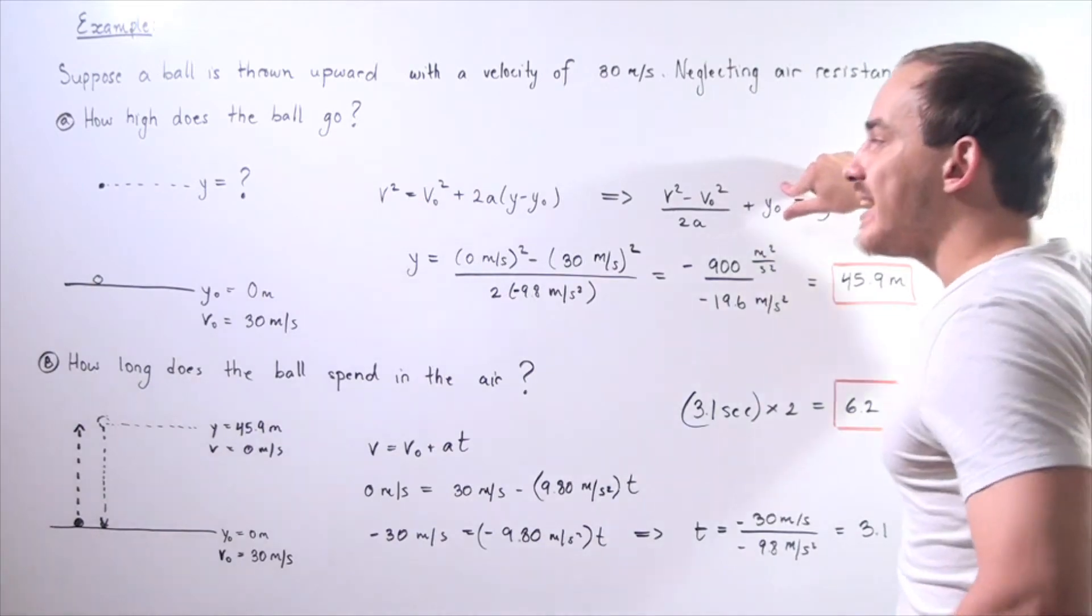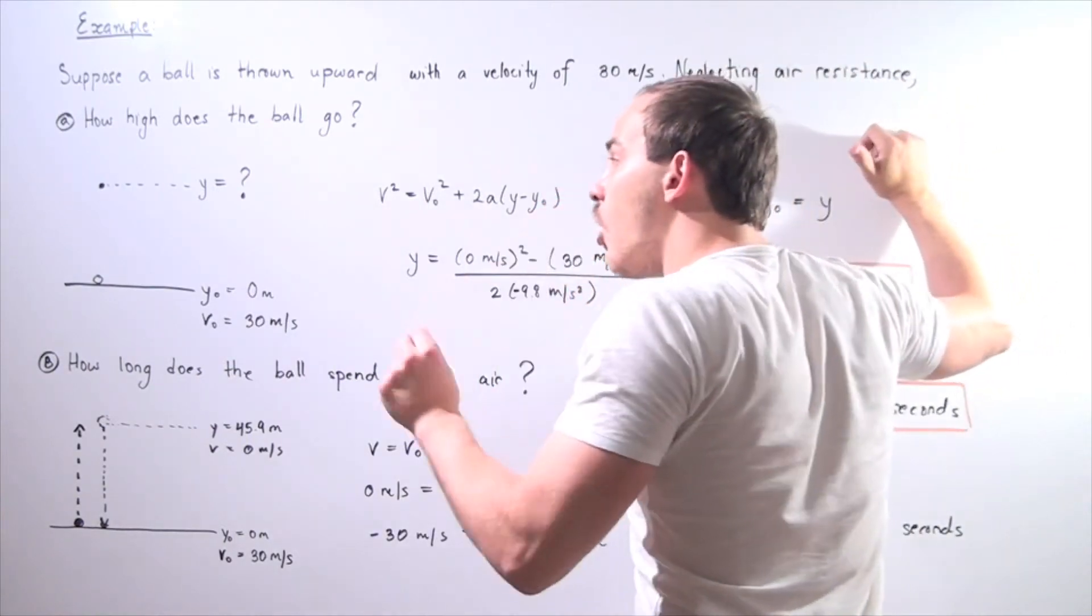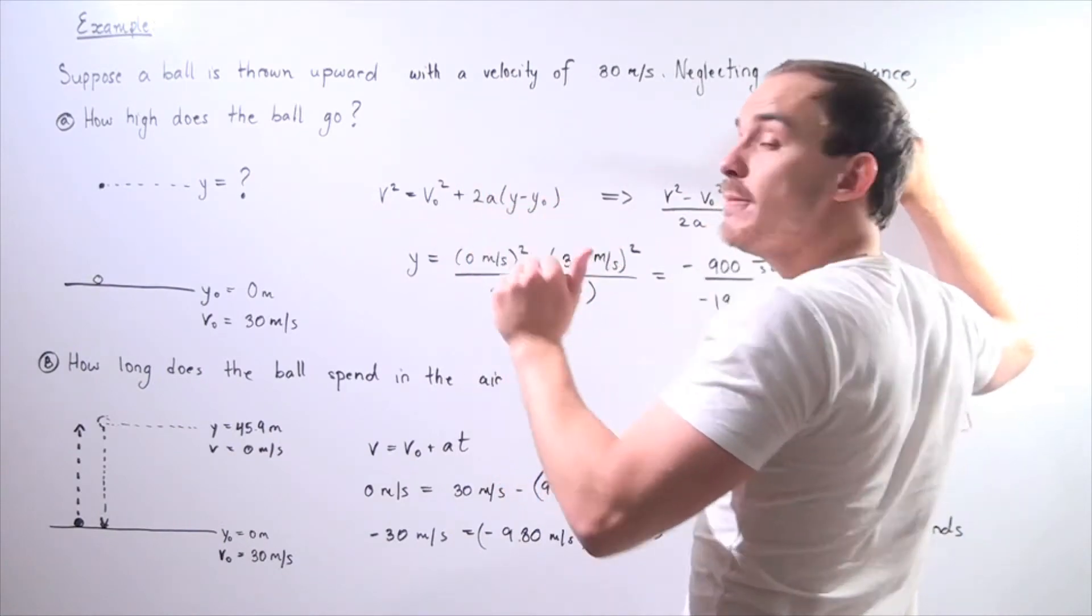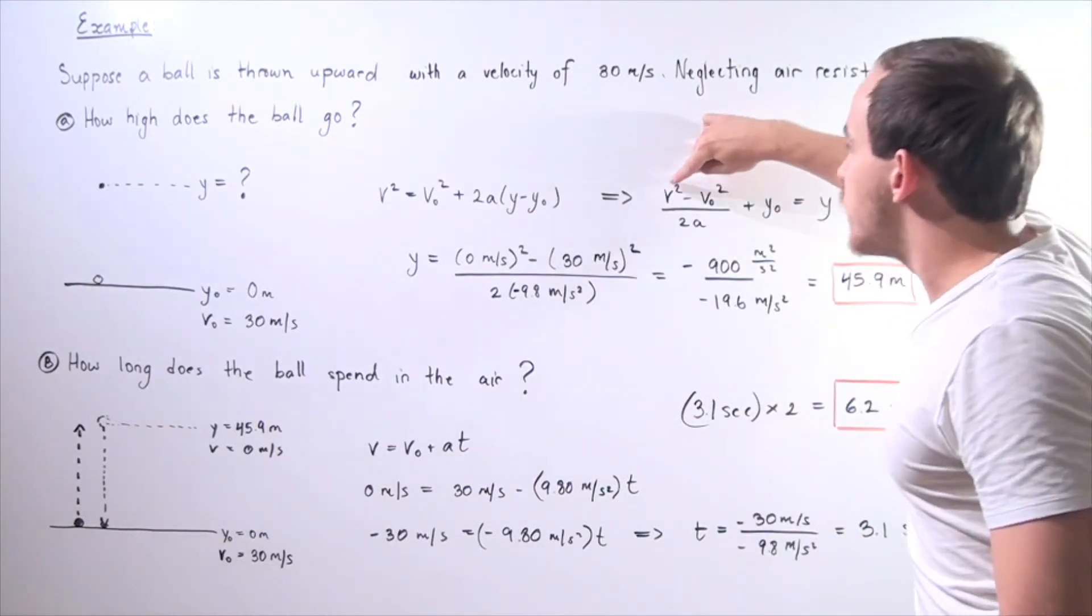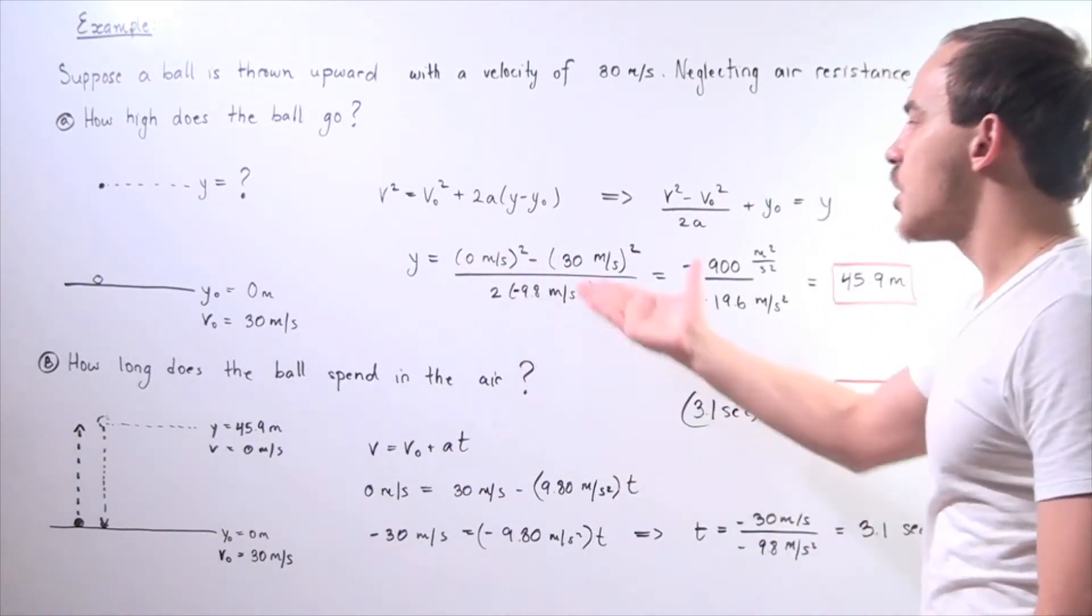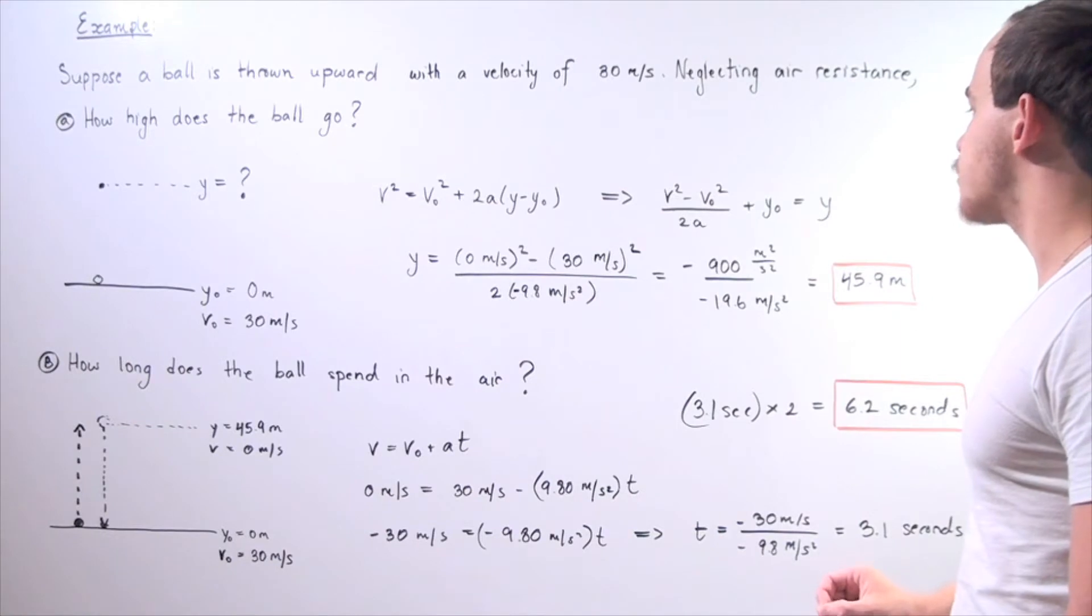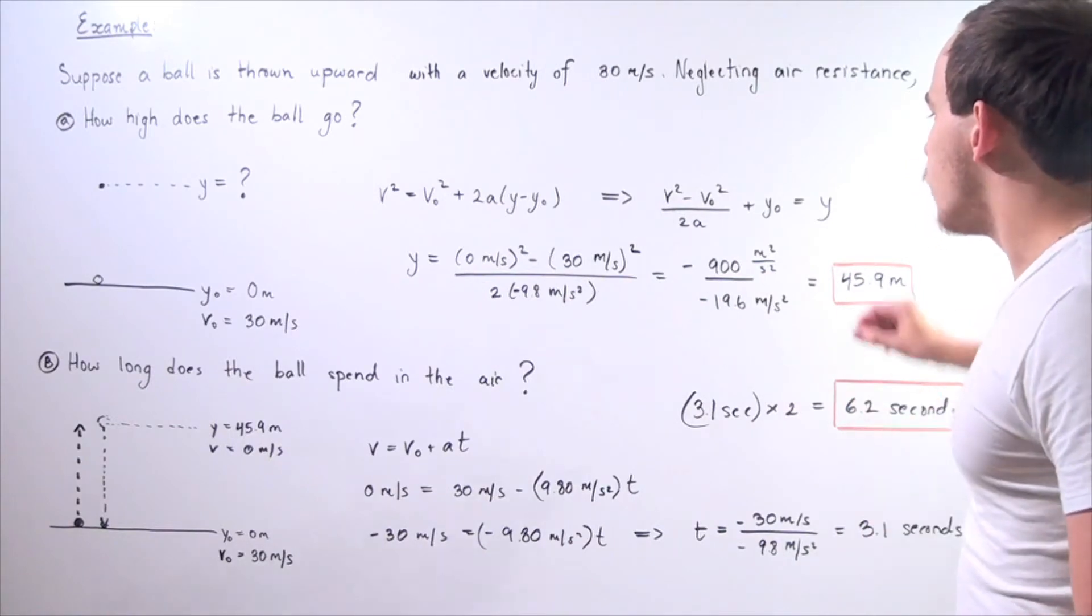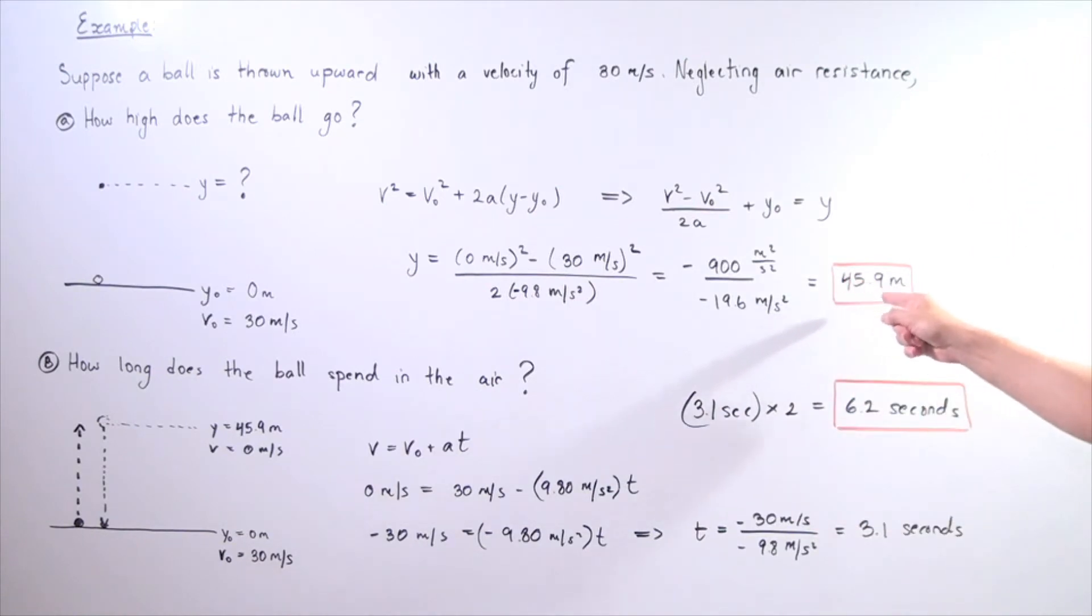So y₀ is assumed to be 0, and v final is also assumed to be 0. Why? Well, when the ball reaches the highest possible position, its velocity is 0. At that point, it begins to travel downward. So our v final is 0. So this term cancels out, and this term also cancels out. So we have 0 squared minus 30 meters per second squared divided by 2 times negative 9.8 meters per second squared.